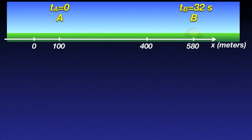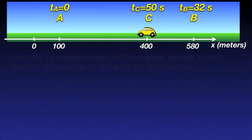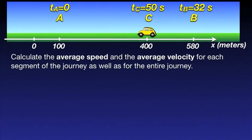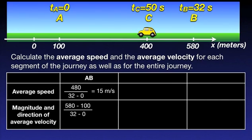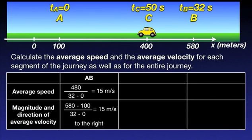Now that we have both speed and velocity properly defined, we can go ahead and discuss a worked example. The car shown on the screen moves from A to C. We want to calculate the average speed and average velocity for each section of the journey as well as for the entire journey. Starting with section AB: the distance travelled is 480 meters in 32 seconds, giving an average speed of 15 meters per second. The displacement is 580 minus 100, which equals 480 meters in 32 seconds, giving an average velocity of 15 meters per second. Since the result is positive, the velocity vector points to the right — the positive direction. Here, the magnitude of the average velocity equals the average speed.